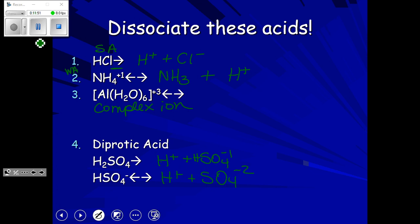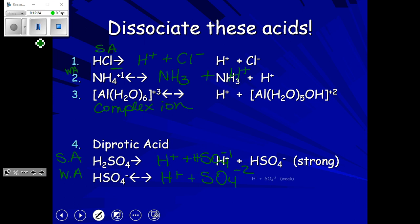We call it polyprotic once it gets past two hydrogens. Phosphoric acid goes through three dissociations, and with phosphoric acid all of them are weak. The more dissociations you go through, the weaker the acid gets. The key from this slide: strong acids dissociate with a single one-way arrow, and weak acids dissociate with a double-headed arrow.